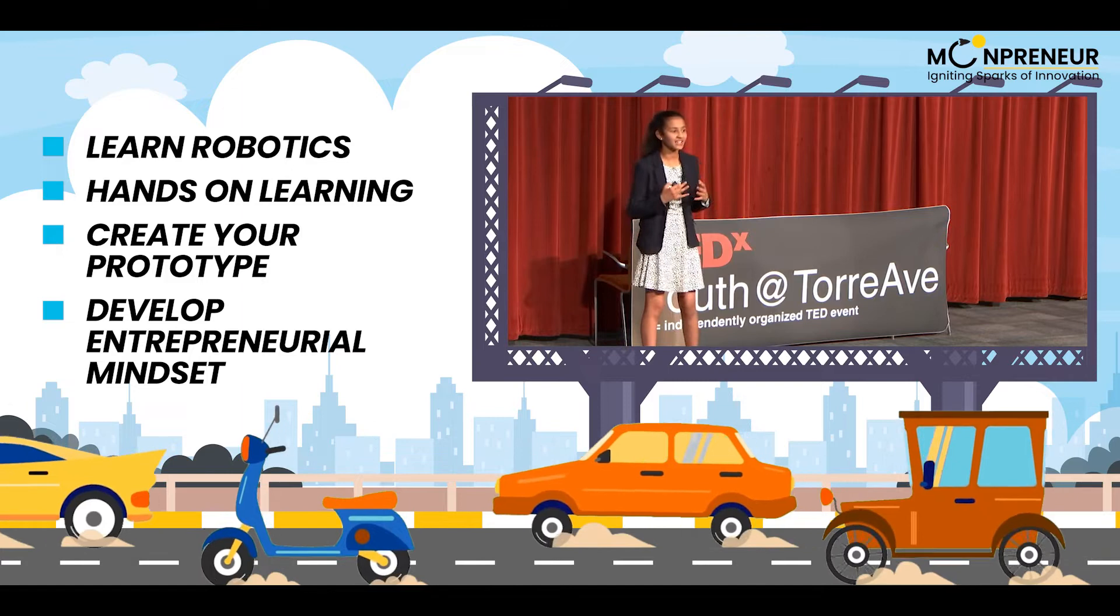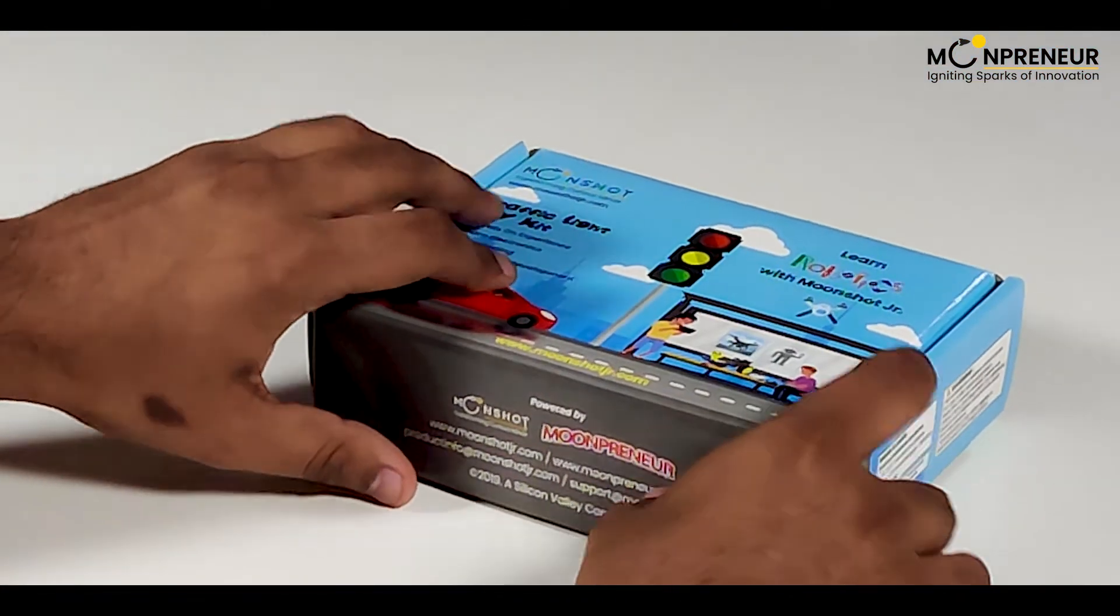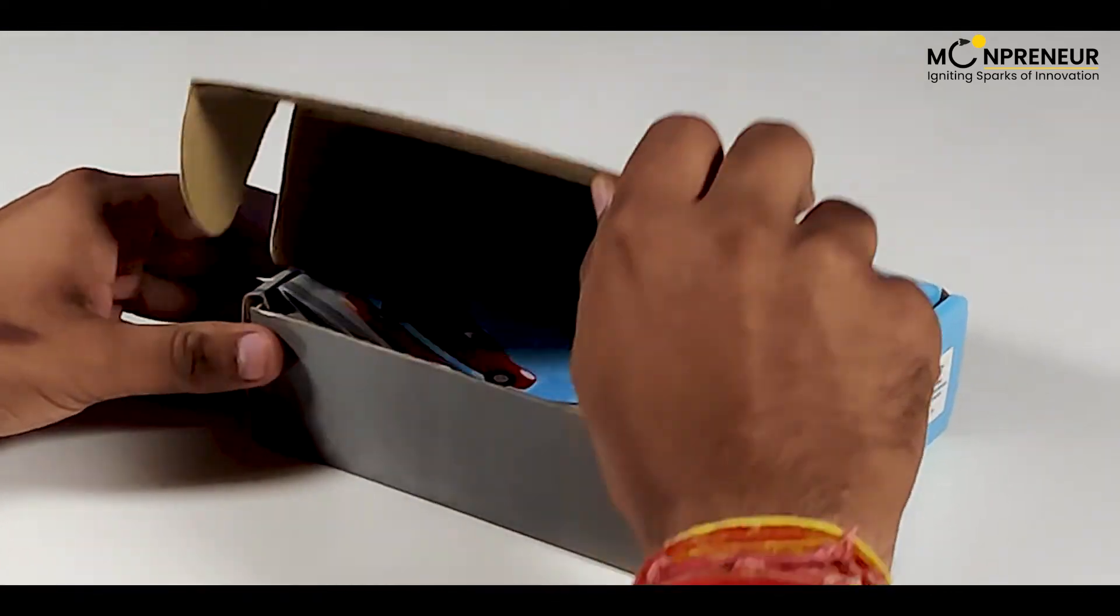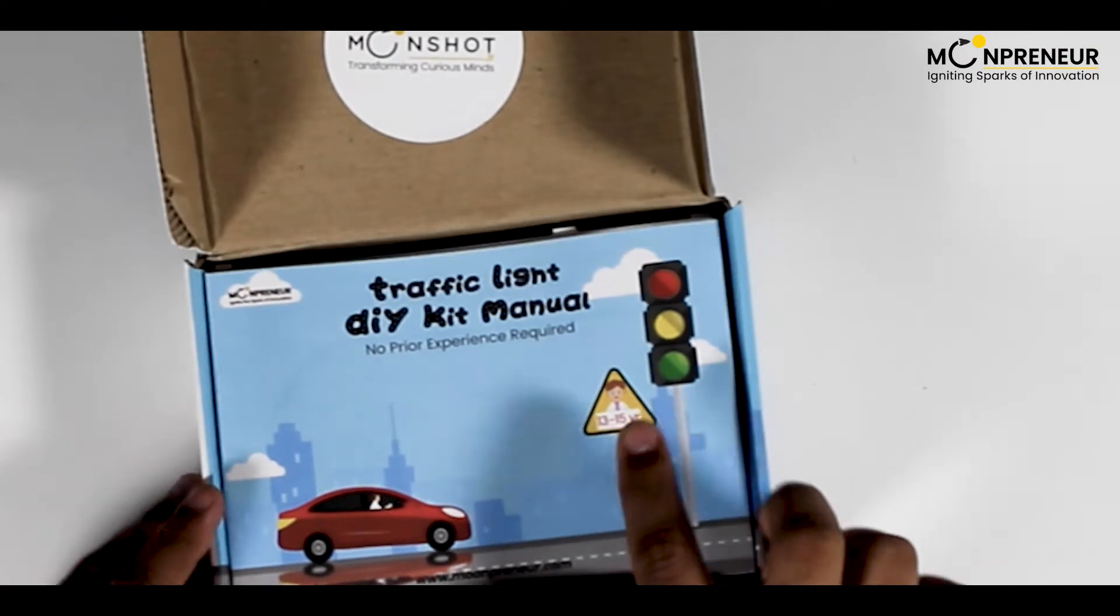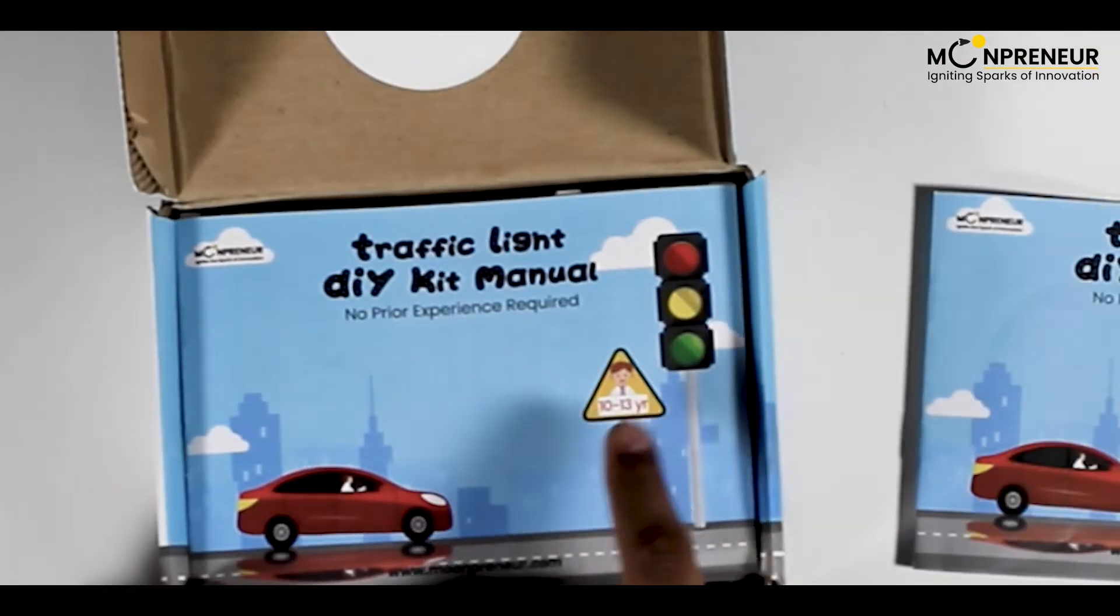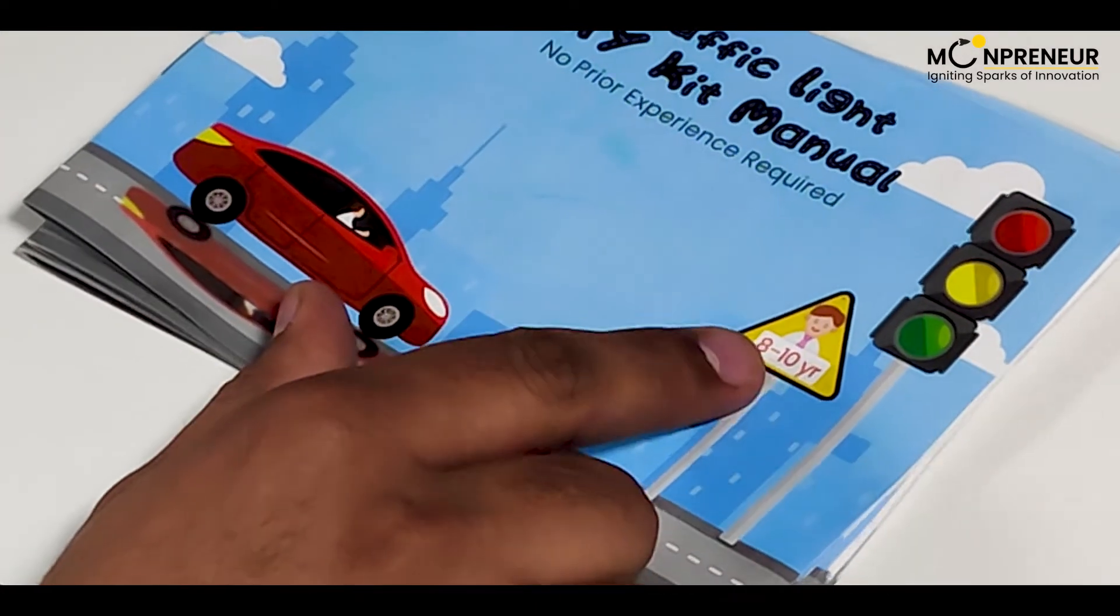So before creating the traffic light project, first, we're going to unbox the kit that you got from Moonpreneur. Here, we have three user manuals for age 13-15, 10-13, and 8-10. For this video, we are going to focus on 8-10.